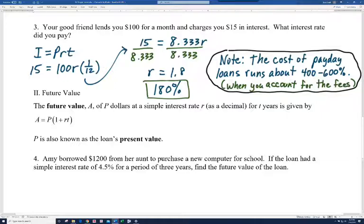All right. So let's look at number four. It says Amy borrowed $1,200 from her aunt to purchase a new computer for school. Seems like a reasonable idea. If the loan had a simple interest rate of 4.5% for a period of three years, find the future value of the loan. All right. So you can see the words, find the future value here. And notice it is simple interest rate. So we're still dealing with simple interest here, which you can see in the formula.